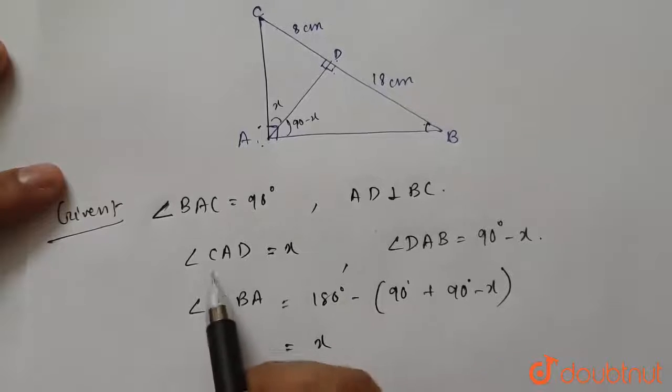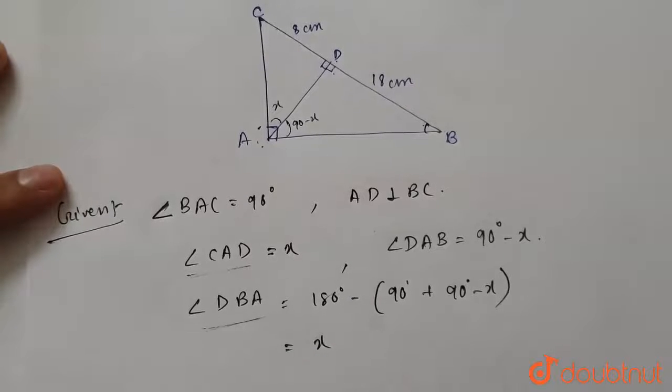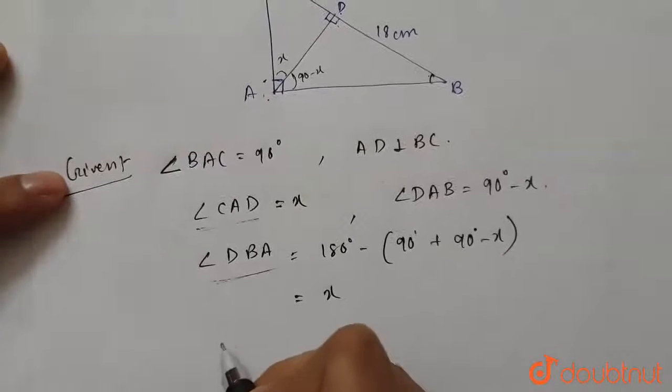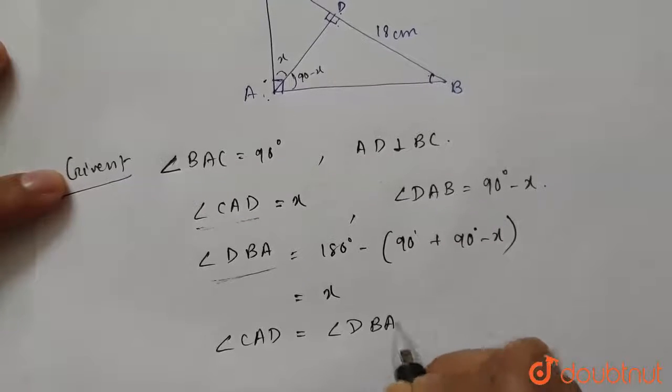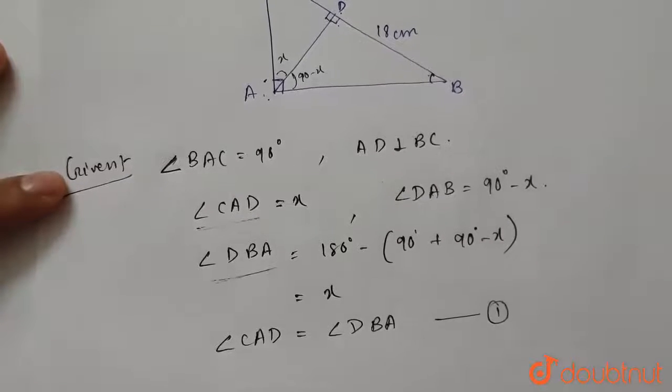From here we can say that angle CAD and angle DBA is equal. So angle CAD equals angle DBA. This is our equation number 1.